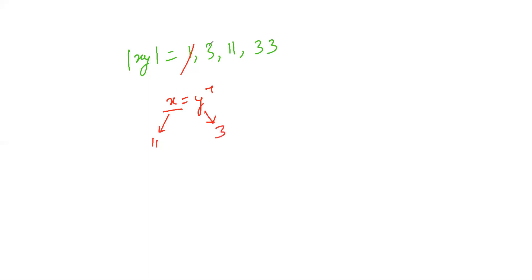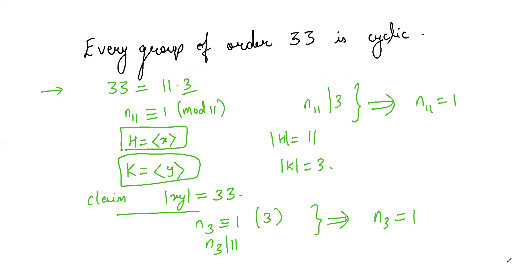So this is not the case. If order of xy is 3, then the subgroup generated by xy is the same as the subgroup generated by y. Why? Because there is a unique Sylow 3 subgroup.